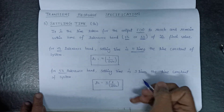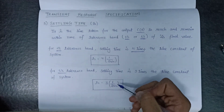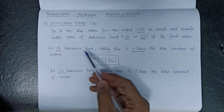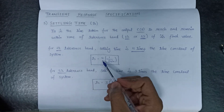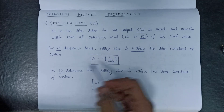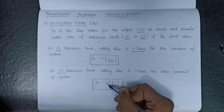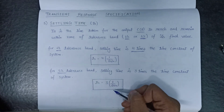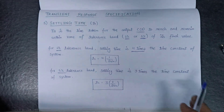So these are the two conditions by which we can calculate the settling time based on the percentage of the tolerance band. For the 2% tolerance band it is 4 times 1 over delta-omega-n, and for the 5% tolerance band it is 3 times 1 over delta-omega-n. This is all about settling time.